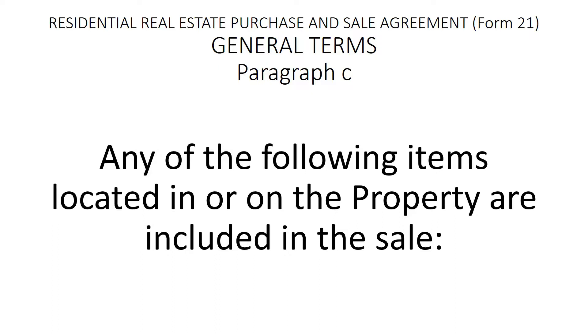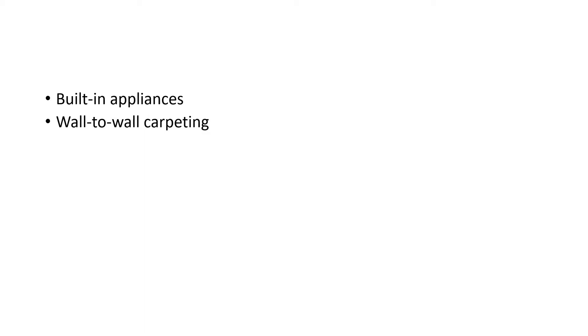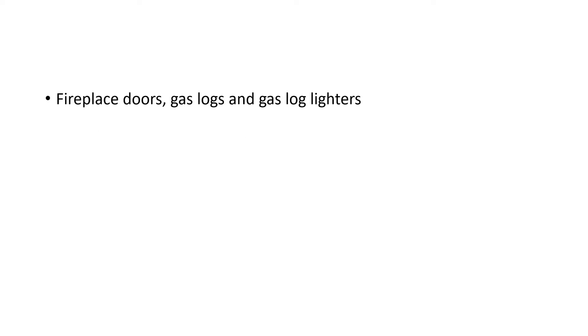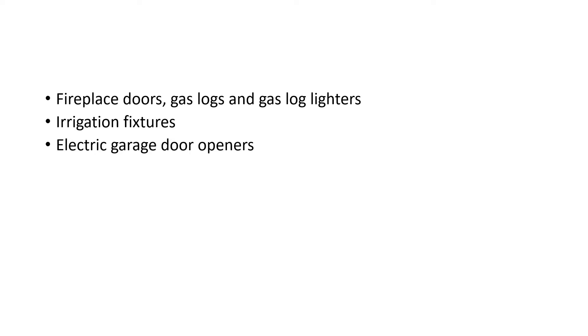General Terms Paragraph C: Any of the following items located in or on the property are included in the sale — built-in appliances, wall-to-wall carpeting, curtains, drapes and other window treatments, window and door screens, awnings, storm doors and windows, installed television antennas, ventilating, air conditioning and heating fixtures, trash compactors, fireplace doors, gas logs, gas log lighters, irrigation fixtures, electric garage door openers, water heaters, and installed electrical fixtures.